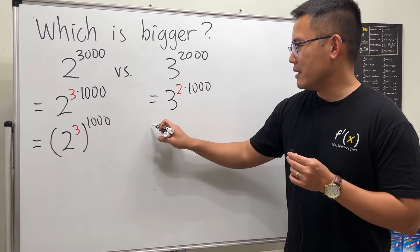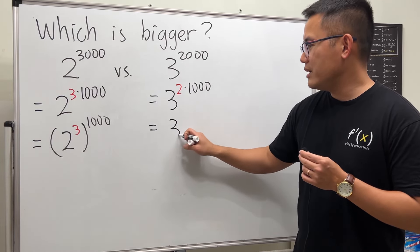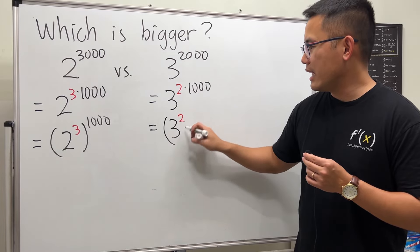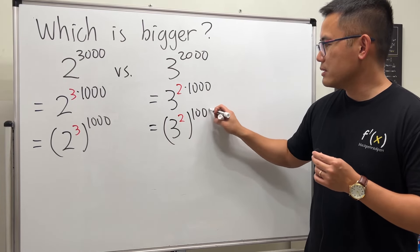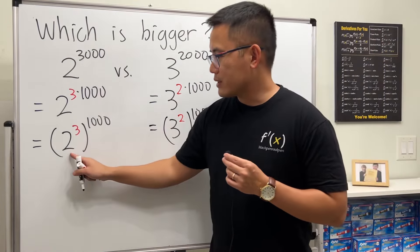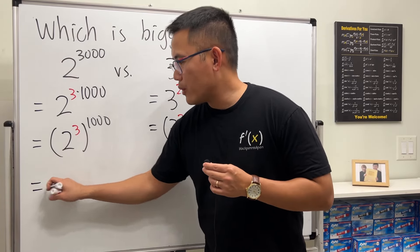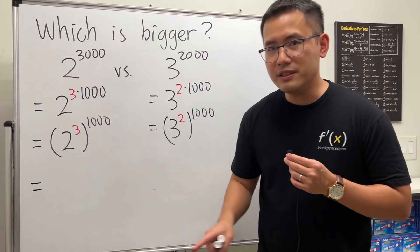So we can do the same thing here: that's 3 to the 2nd power and then raise to the 1000th power. Work this out: 2 to the 3rd power means 2 times 2 times 2, which is 6—not, just kidding! It's 8. And 3 squared is 9.